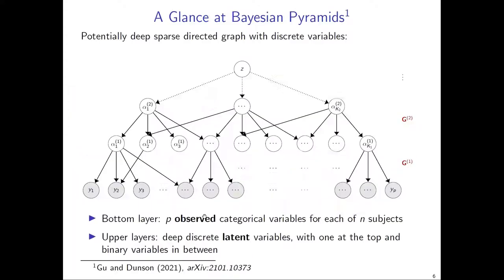A clarifying question was raised about the n subjects. This is a graphical model illustration where each random variable will have subject-specific realizations. For example, if we have a sample of n subjects, then each subject will have their realizations of the p-dimensional responses at the bottom. So you can consider the data as a matrix with n rows and p columns, where each row is a realization of the observed variable. All the white nodes are unknown but also subject-specific — each subject has a latent variable. The architecture is more general than a tree, because it is a DAG allowing each node to have multiple parents. The number of nodes in the bottom layer is p, not n.